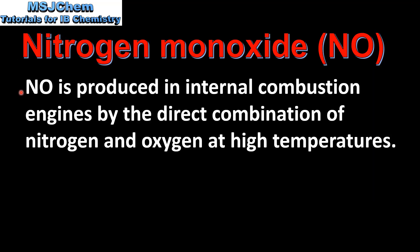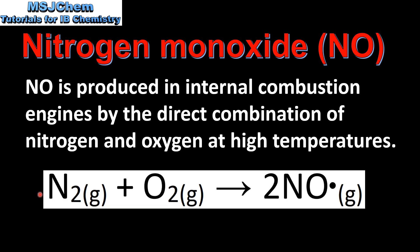Nitrogen monoxide is produced in internal combustion engines in vehicles by the direct combination of nitrogen and oxygen at high temperatures. This equation shows the formation of nitrogen monoxide from nitrogen and oxygen in the presence of high temperatures inside an internal combustion engine.